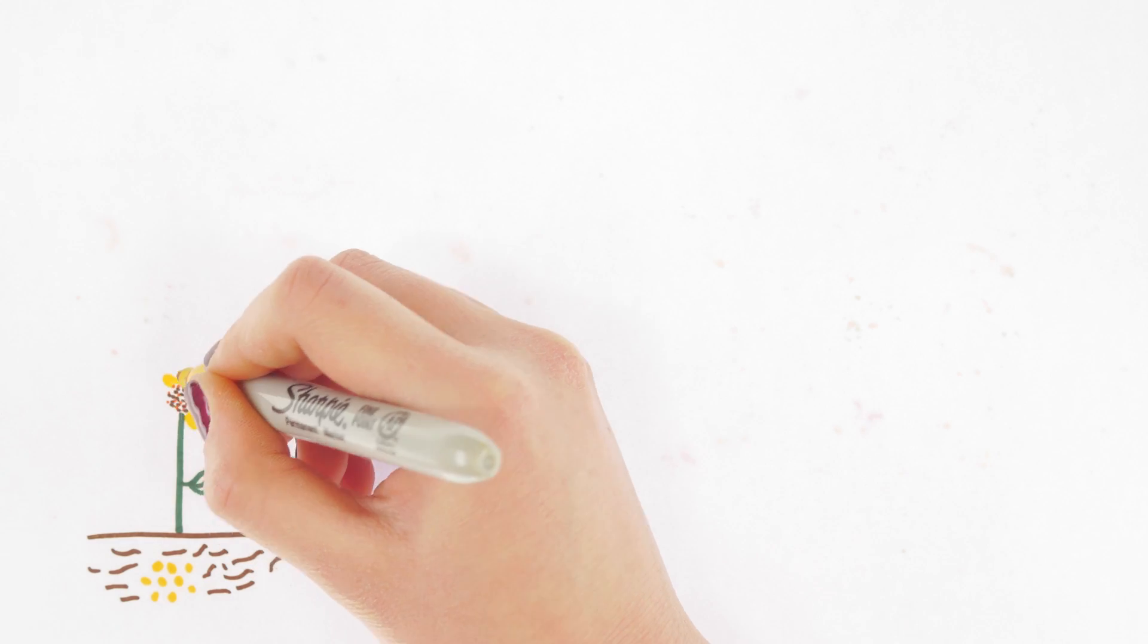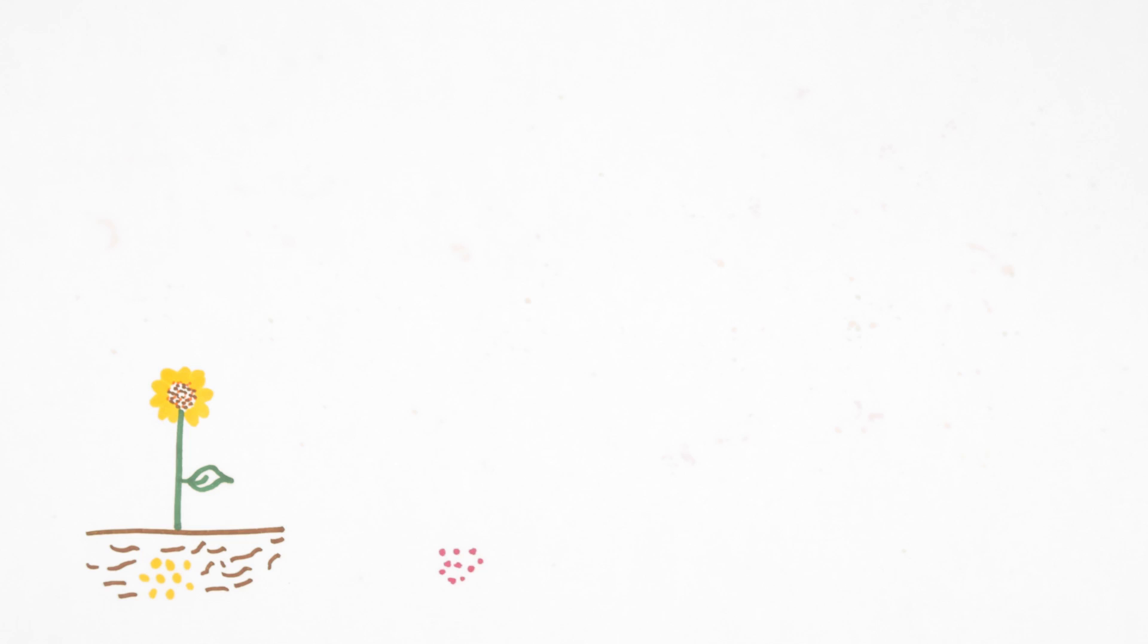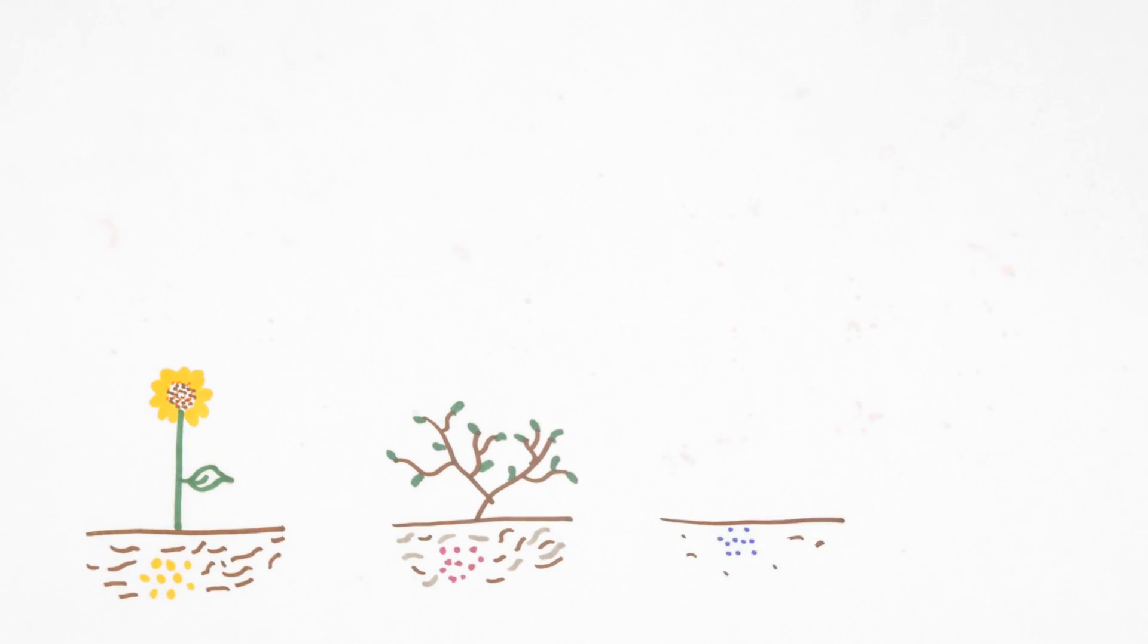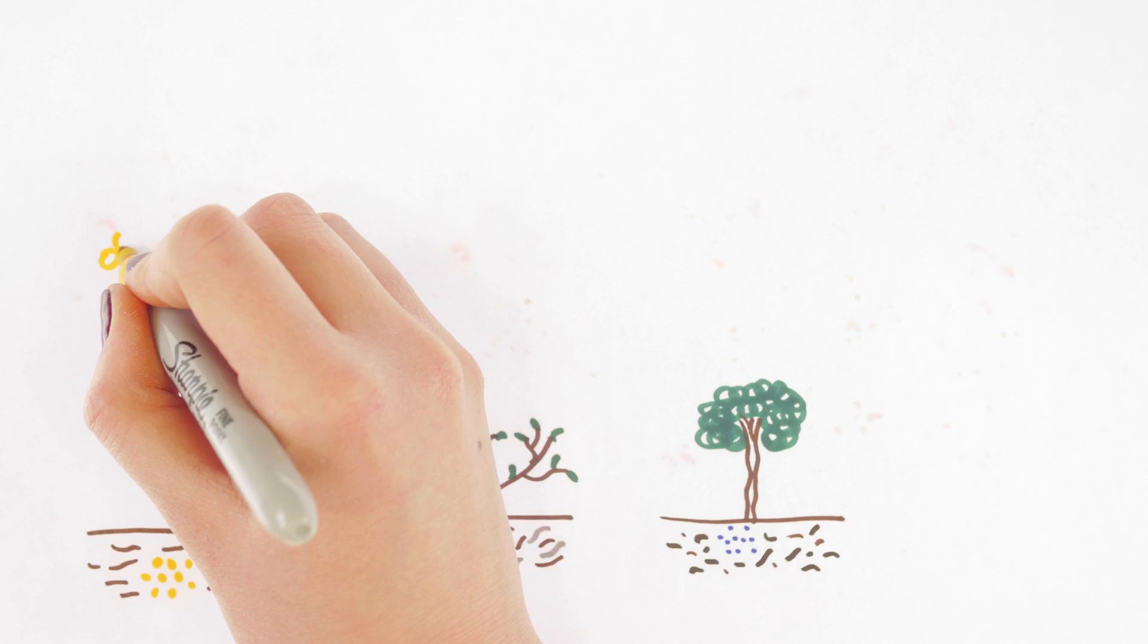Different types of seeds have different optimal growing conditions and so they will each grow best in different soil types. The same goes for different types of cancers, which favor certain secondary sites in the body.